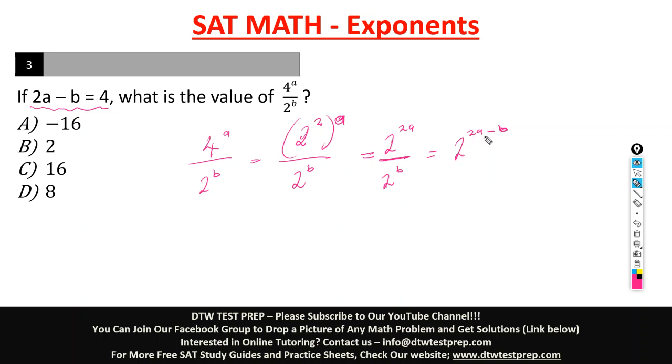We have 2 raised to the power 2a minus b. So from here, we know that 2a minus b is equal to 4. So all this is equal to 4. So we do 2 to the power of 4 because we are told to look for the value. So the value will be a number.